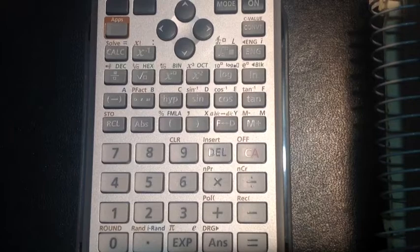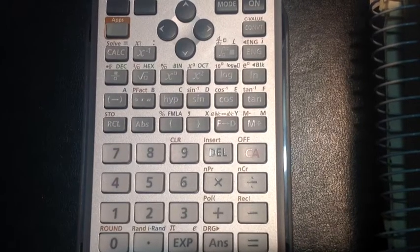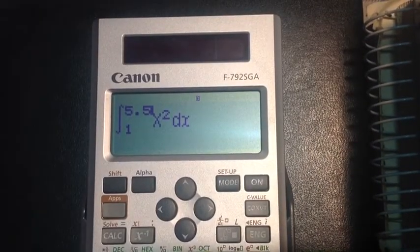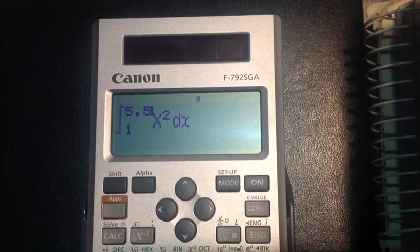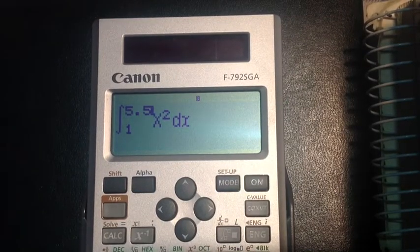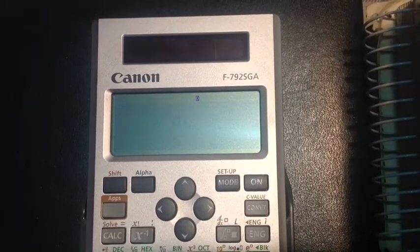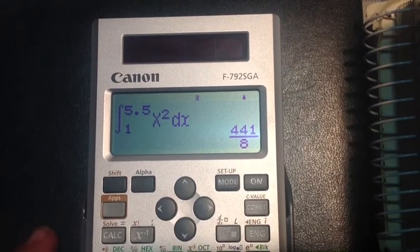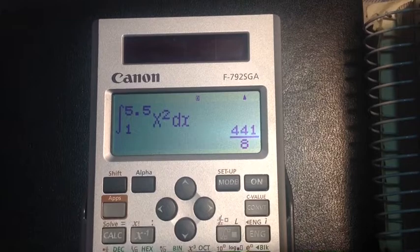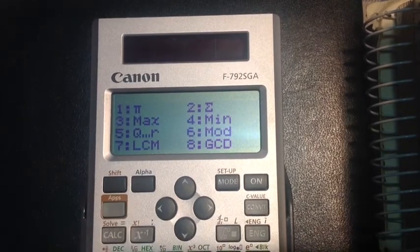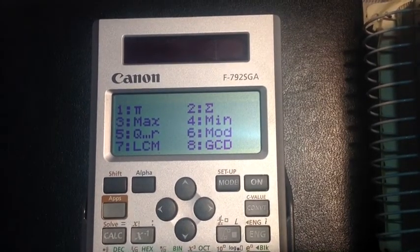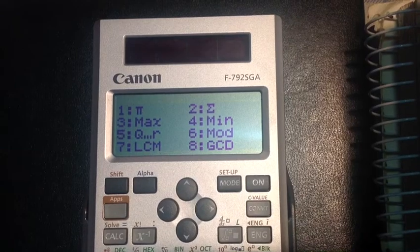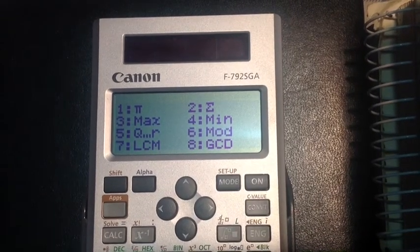But there are several distinguishing features. In addition to the great calculus features the Canon F792SGA has, like integrals and derivatives, the calculator boasts an apps button. I'm in the comp mode right now, so pressing the apps button gives me additional functions, such as product,